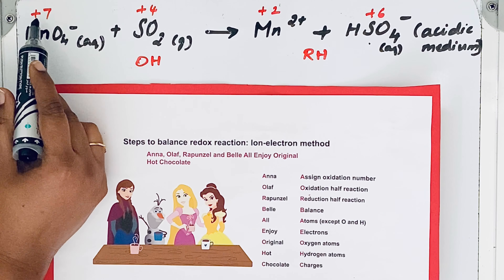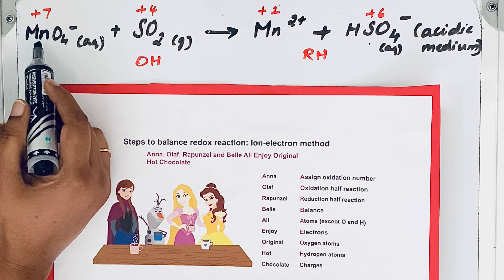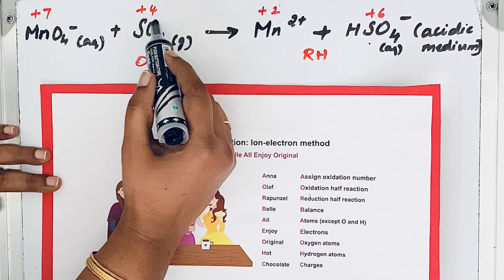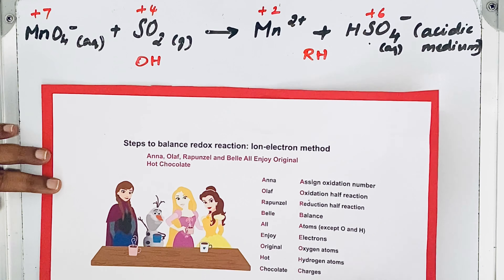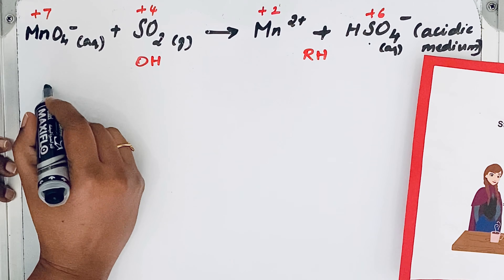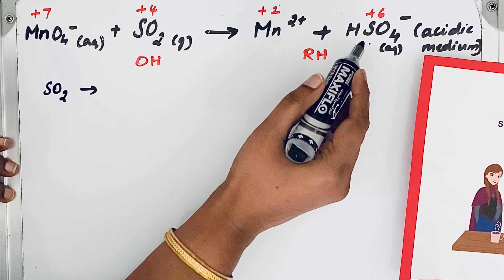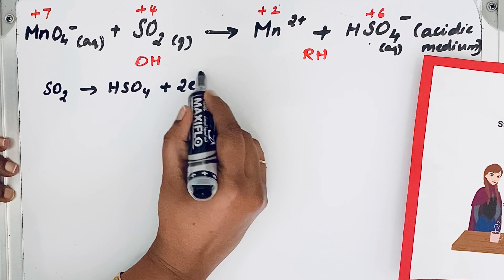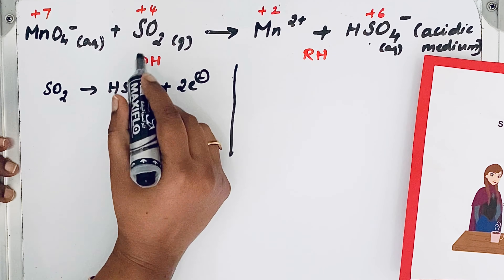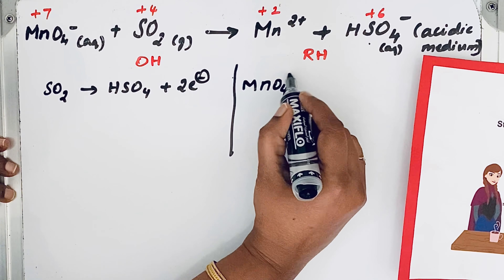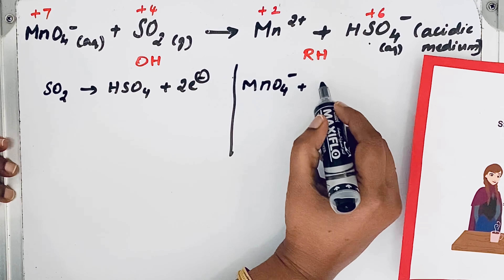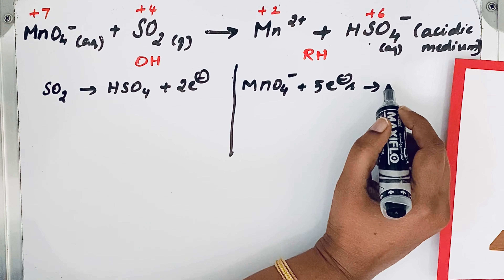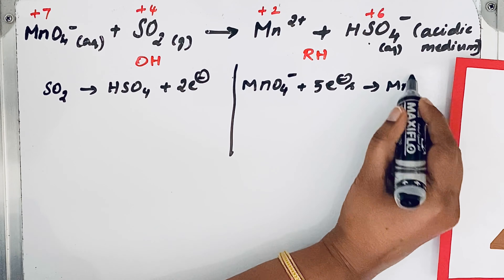Here, MnO4⁻ has its oxidation number reduced from +7 to +2, so that is reduction. In sulfur dioxide, the oxidation number increases from +4 to +6 — two numbers increased — so that is oxidation. SO2 → HSO4⁻: two electrons are lost. For the reduction, MnO4⁻ gains five electrons and is converted into Mn²⁺.